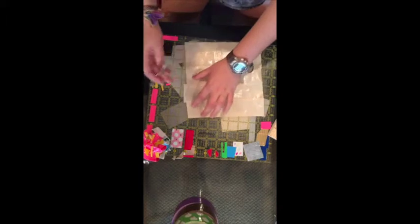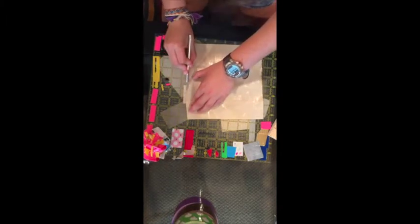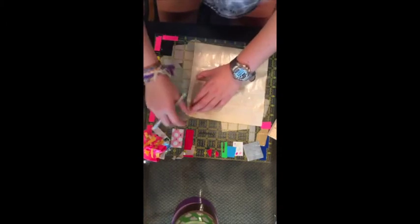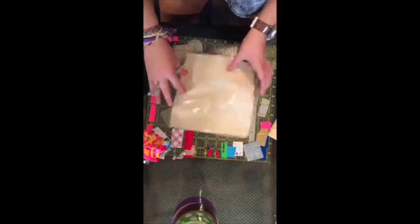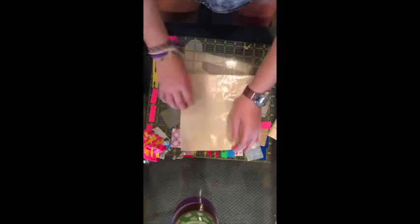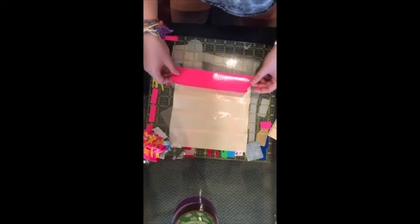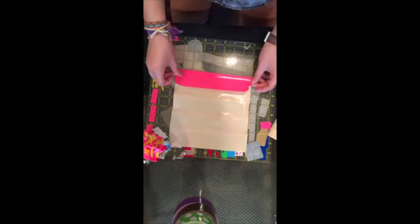After you have made your sheet, you can trim off the bad ends if there are any uneven ends. Trim them off to make them even. And then, after this, you are going to put another layer of duct tape on top of the sheet that you have right now.